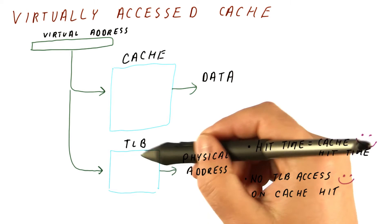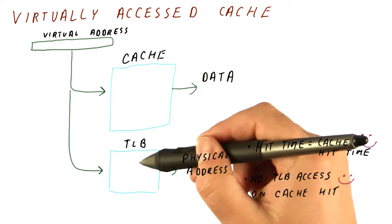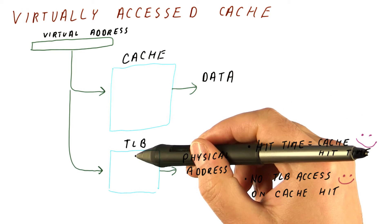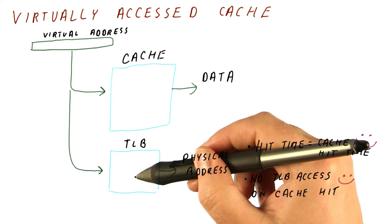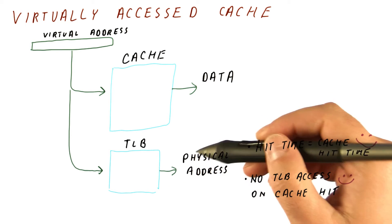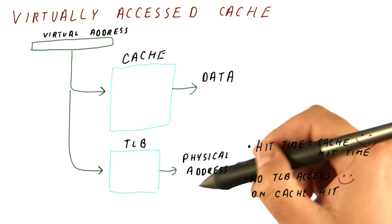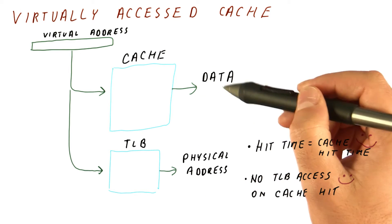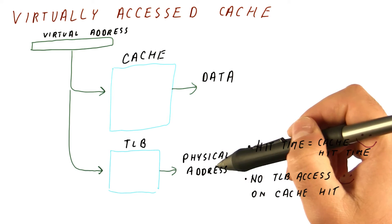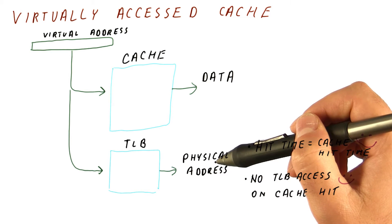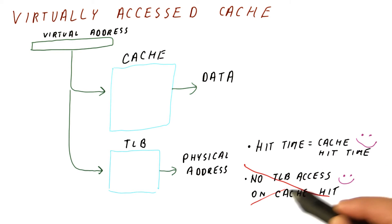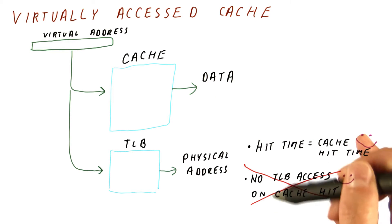Well, first of all, the TLB, in addition to containing the translation for the physical address, also contains permissions that tell us whether we are allowed to read, write, or execute certain pages. So even though we don't need a physical address from the TLB in order to get our data, we still need to access the TLB even on cache hits just to get the permissions. So this advantage really doesn't exist in real processors.